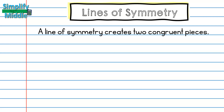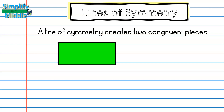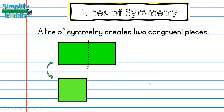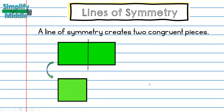A line of symmetry creates two congruent pieces. Here I have a rectangle. I want to think of my line of symmetry as making a fold — when I make the fold, the two sides need to come together exactly with no overlapping. Here I can make a line of symmetry going from top to bottom, and if I fold that, it creates two pieces that come together exactly.